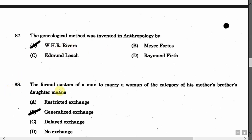The next question is: The formal custom of a man to marry a woman of the category of his mother's brother's daughters is called — Option A: Restricted exchange. Option B: Generalized exchange. Option C: Delayed exchange. Option D: No exchange. The correct answer is Option B, that is Generalized exchange.